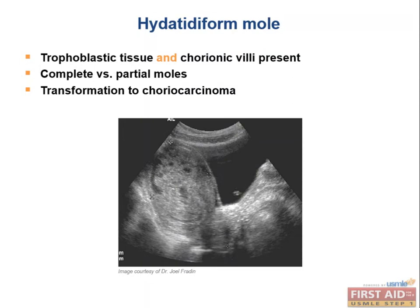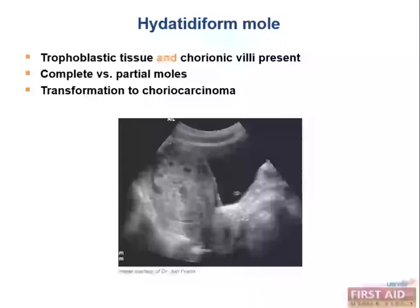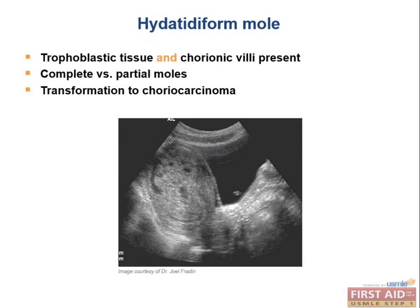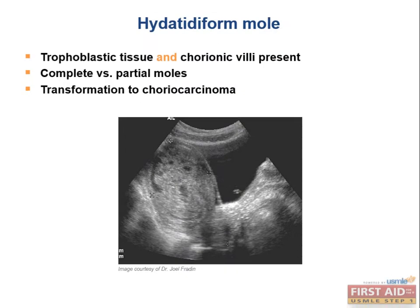Complete mole has greater HCG production relative to a partial mole. The USMLE loves contrasting hydatidiform mole with preeclampsia. Preeclampsia is an increase in blood pressure and proteinuria beyond 20 weeks of pregnancy. But if hypertension and proteinuria are mentioned at 12 weeks, hydatidiform mole is typically the answer — they want you to know the symptoms present early for hydatidiform mole. The classic way to diagnose it is by ultrasound, showing a characteristic snowstorm appearance.